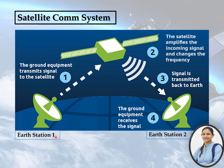Here we can see the antenna situated on Earth, simply called Earth Station 1, transmitting the signal to the satellite, and the satellite amplifies the incoming signal.